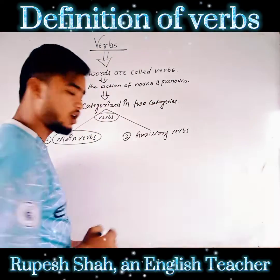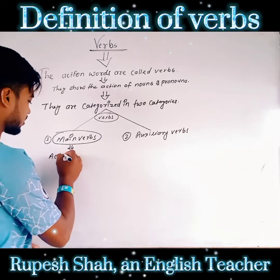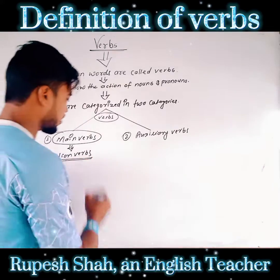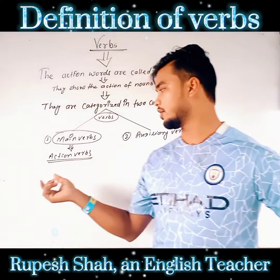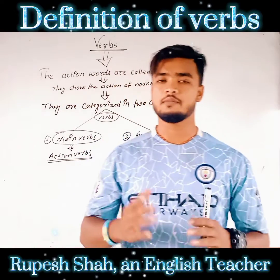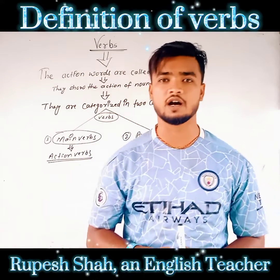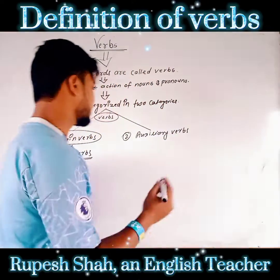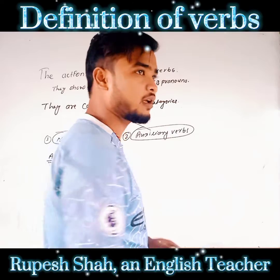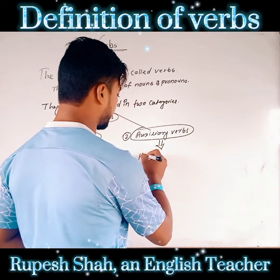Main verbs are also known as the action verbs. Similarly, we can say that auxiliary verb has also got a similar meaning. The similar meaning of auxiliary verb is helping verbs. So auxiliary verbs and helping verbs are similar to each other, and action verbs and main verbs are similar in meaning to each other.